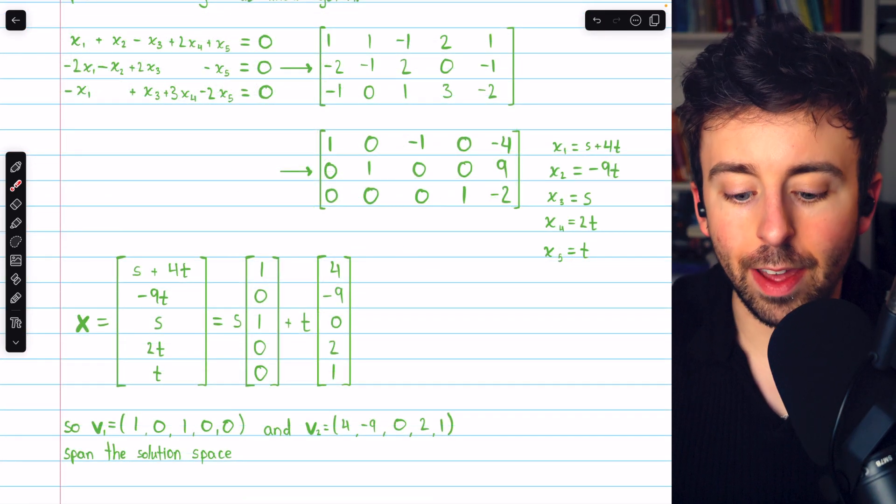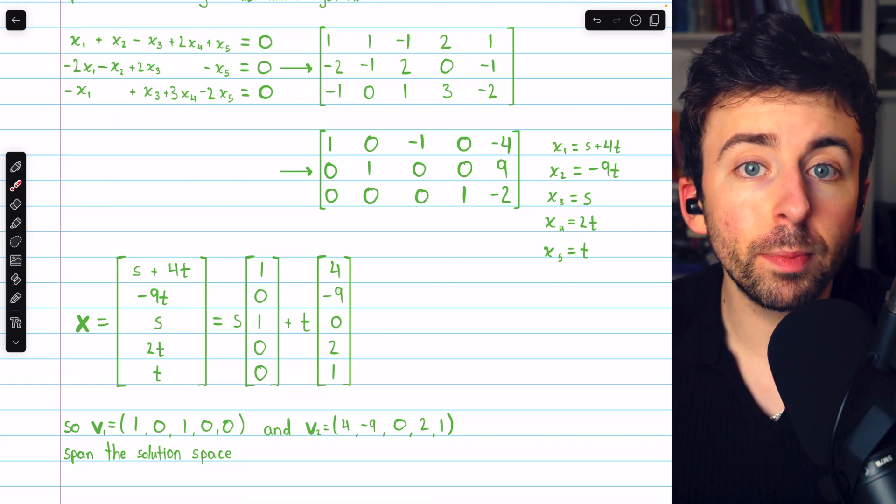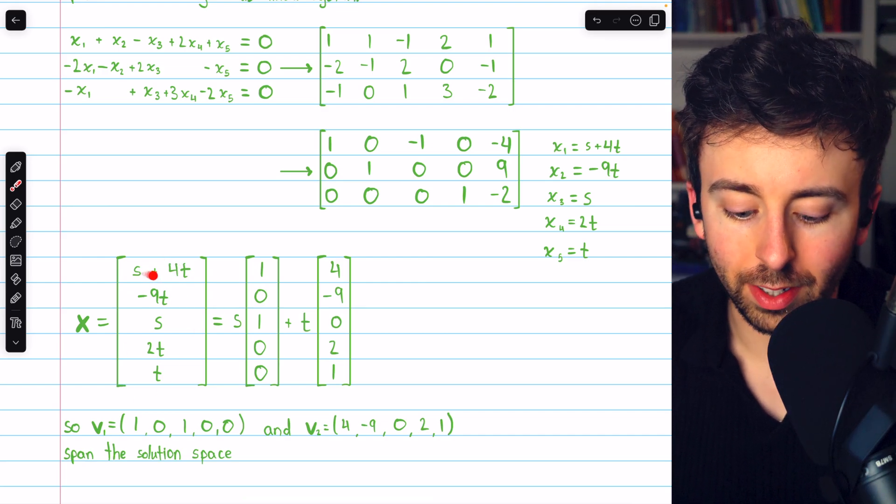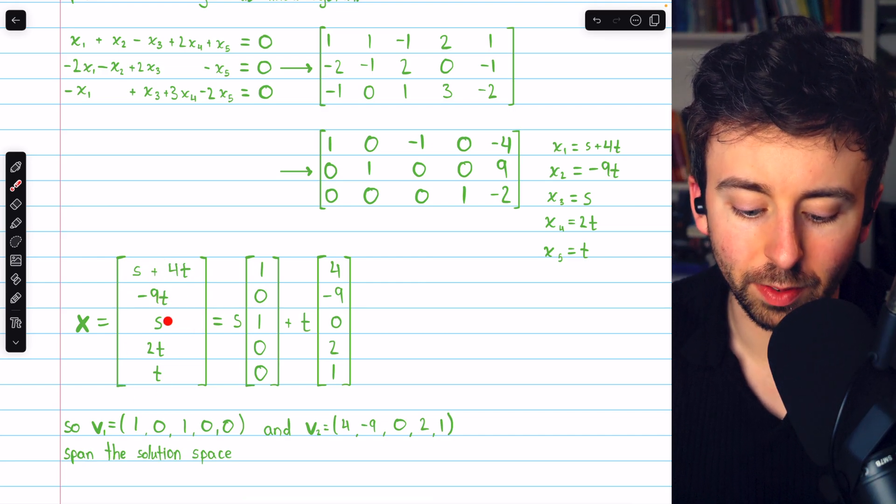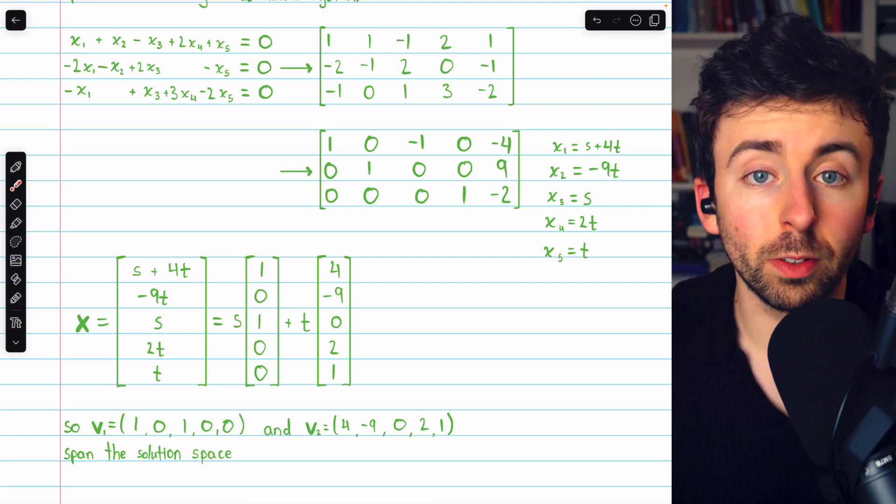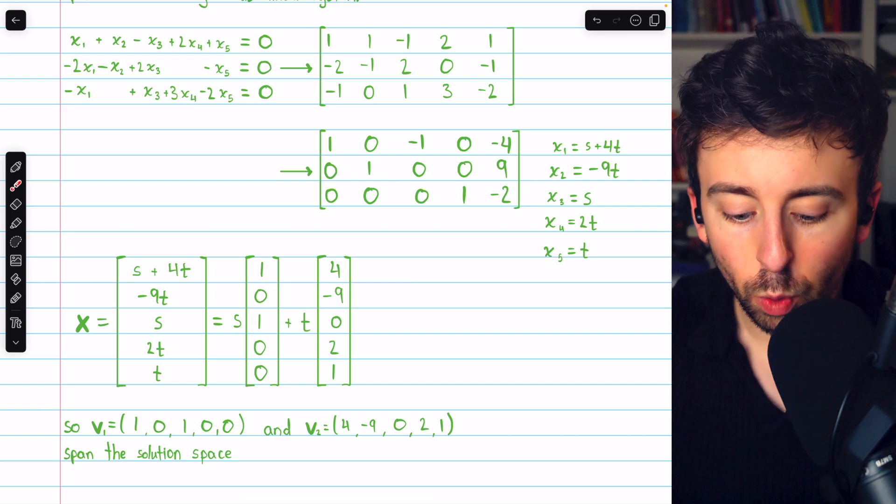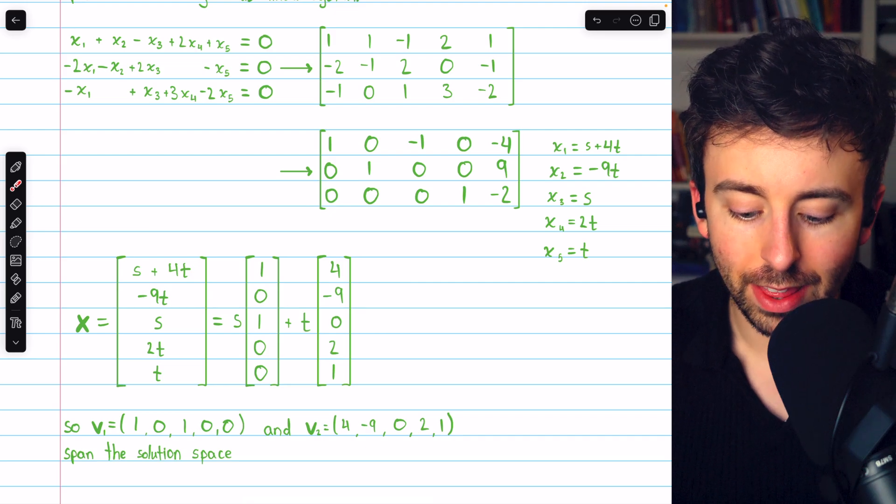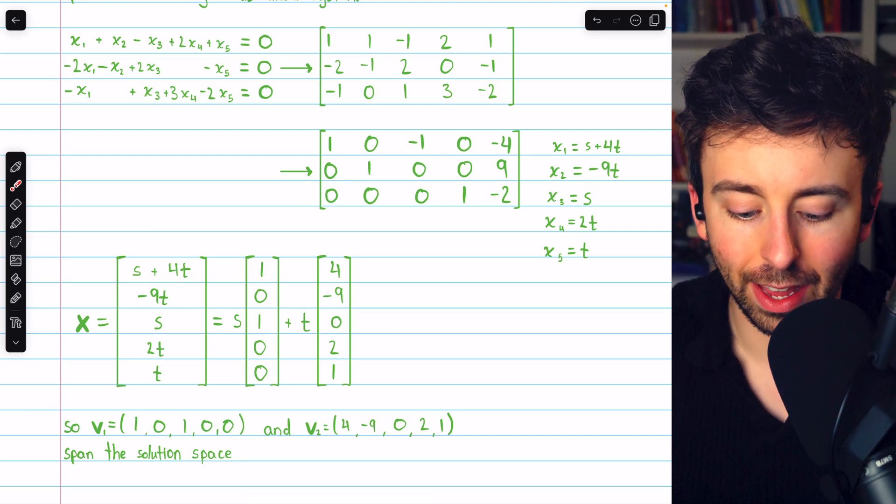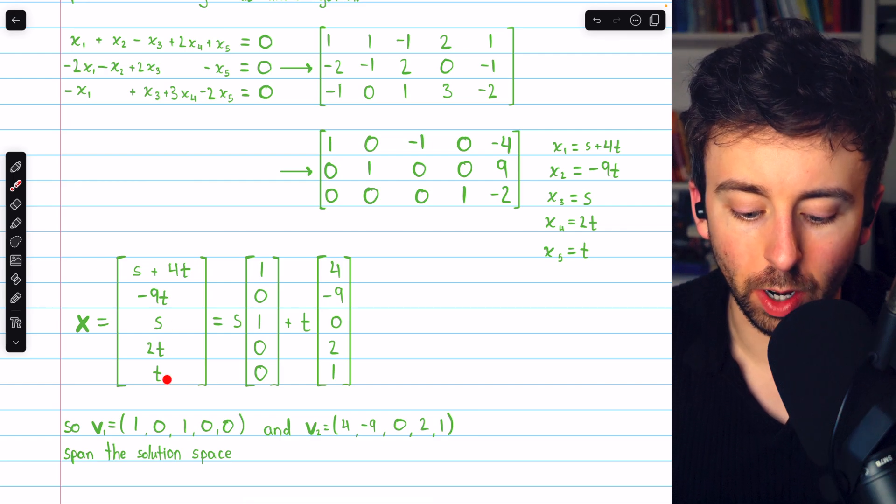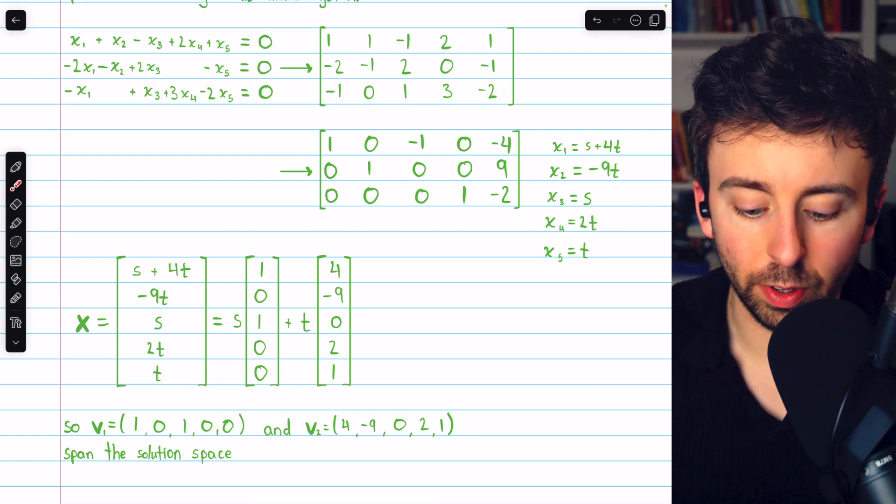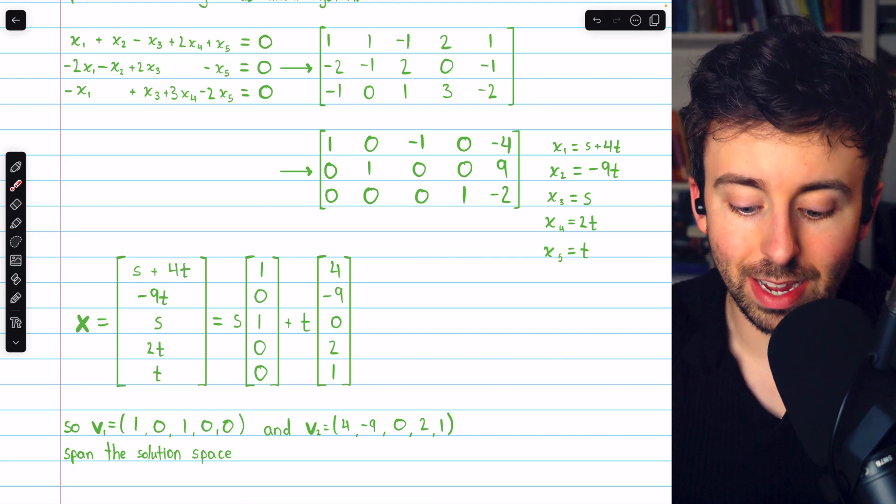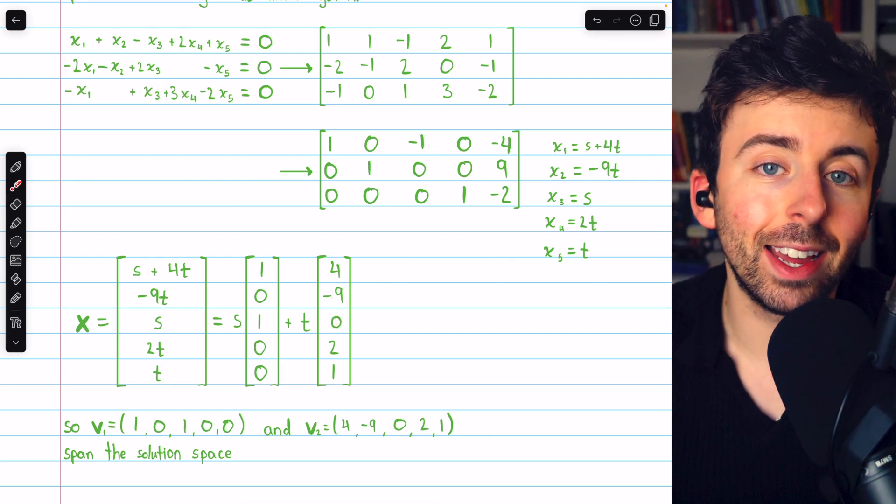So any vector in R⁵ that is a solution to this system must be a vector of this form. So it would look like this. The first component is s plus 4t, the second component is negative 9t, and so on. Since there are two free variables, hence two parameters, we can break this single solution vector up into a linear combination of vectors. This one representing the coefficients of s 1,0,1,0,0 and this other vector with the coefficients of t, 4, negative 9, 0, 2, and 1.